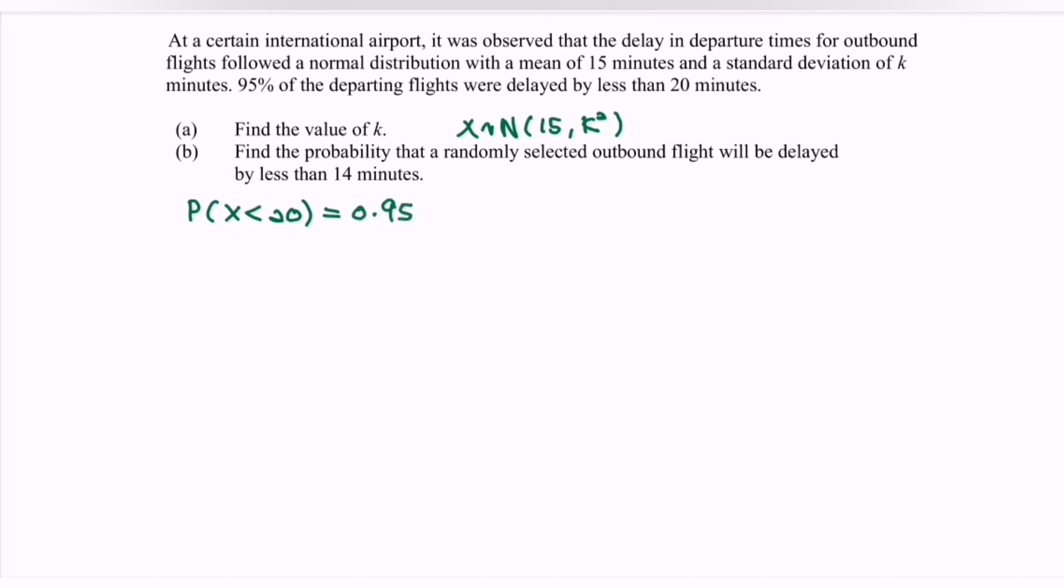Let's refer to question A: find the value k. First, what we have to do is standardize the situation, so probability that z less than (20 minus 15 over k) equals 0.95.